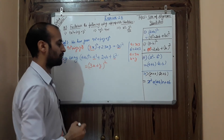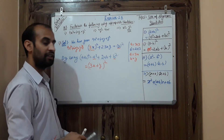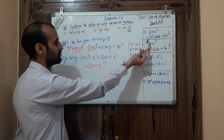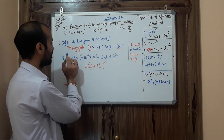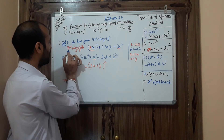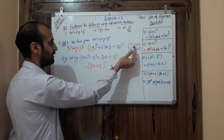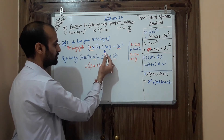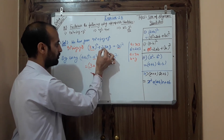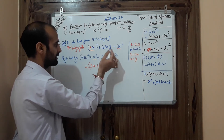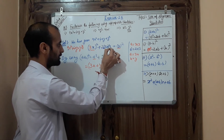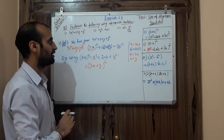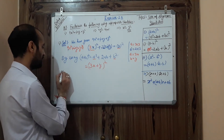So by using this identity, I can write the answer as (3x + y)². That is the answer for the first part. The method is: write the question, try to split the terms, check which identity it resembles, then compare and split — 9 becomes (3)², 6xy becomes 2 × 3 × x × y — giving (3x + y)².